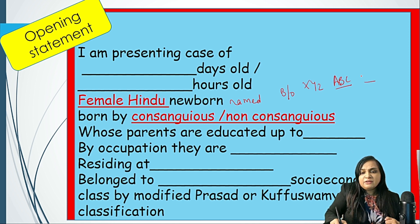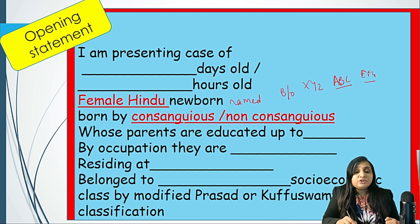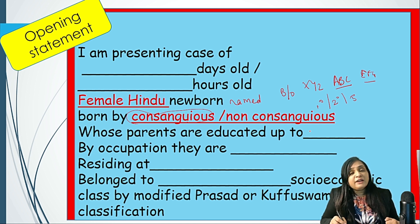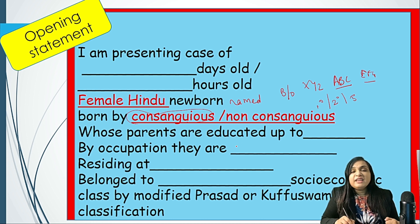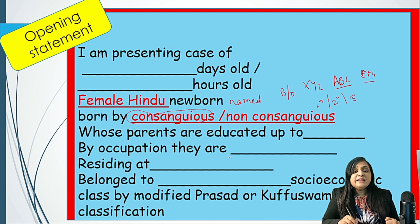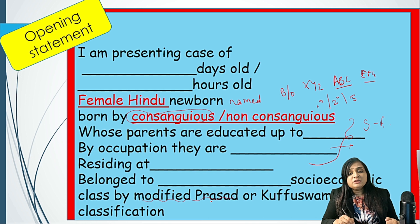Your opening statement should read: 'A female Hindu newborn named Baby of XYZ, father's name ABC, surname EFG, born by consanguineous or non-consanguineous marriage.' If consanguineous, mention the degree — first, second, or third degree. Then add the parents' education level, occupation (laborer, office worker, business, private practice), and residence. These three factors help determine the socioeconomic status — upper-middle, upper-lower, middle — using the modified Prasad or Kuppuswamy classification.